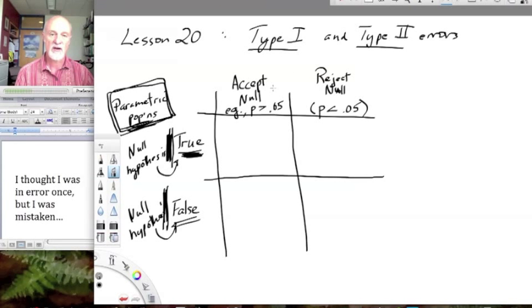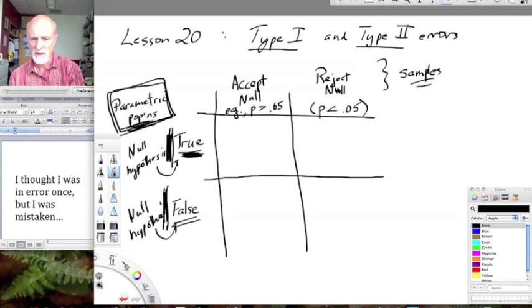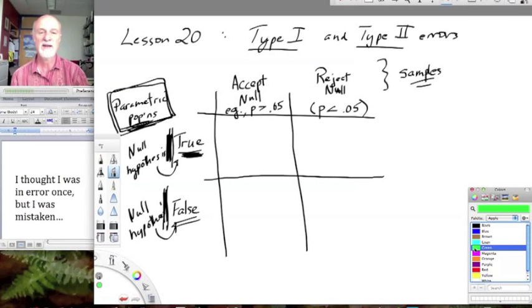What have we done here? We've done a statistical test based upon our samples, but this isn't the truth. This isn't the actual situation with the parametric populations from which we're sampling. In fact, we are attaching a probability, and then based on that probability, we're either rejecting the null or we're accepting the null. I'm going to change pen colors here to indicate what that means.